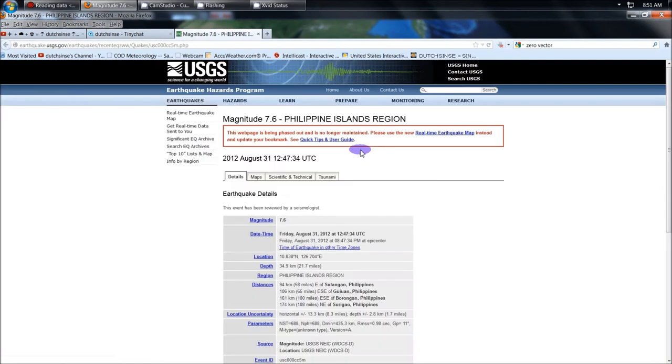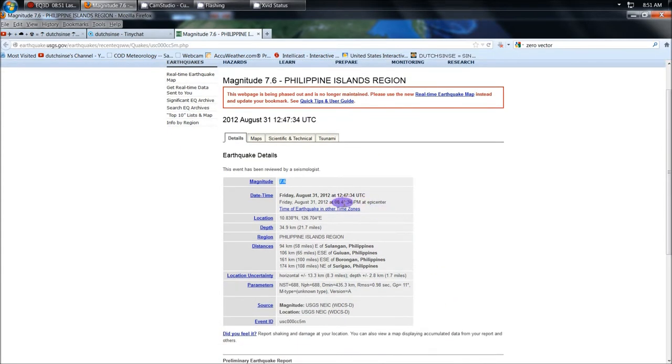Now let's go ahead and get the stats on this. 7.6 magnitude, originally was 7.9, it has been downgraded by 0.3, however it is still very sizable for the region, and the depth, 21.7 miles deep.